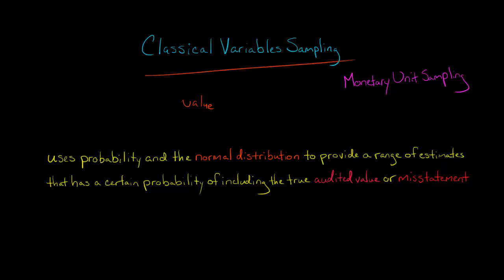But classical variable sampling is different than monetary unit sampling because with classical variable sampling, we're using probability and the normal distribution. We have to estimate the standard deviation and so forth, so we're basically using statistics.